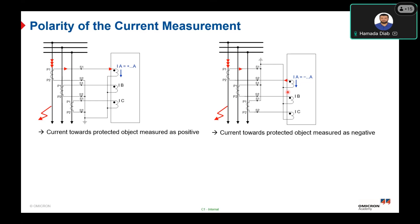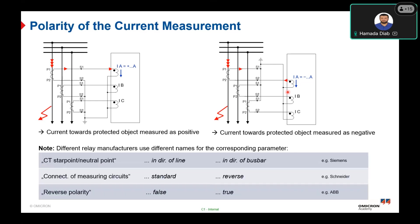The CT start point grounding information depends on the relay manufacturer. For Siemens relays, the parameter can be set as 'in direction of line' or 'in direction of busbar,' and this parameter is called 'CT start point / neutral point.' For Schneider relays, the parameter is called 'connection of measurement circuit' — standard means towards the protected line, reverse means towards the busbar. For other manufacturers, it may be called 'reverse polarity,' where false means the CT is directed towards the busbar.